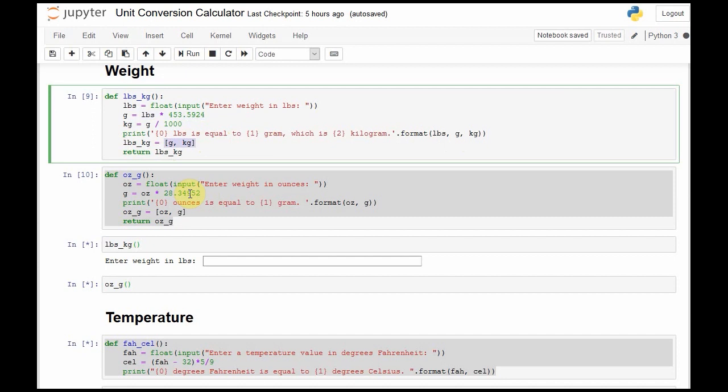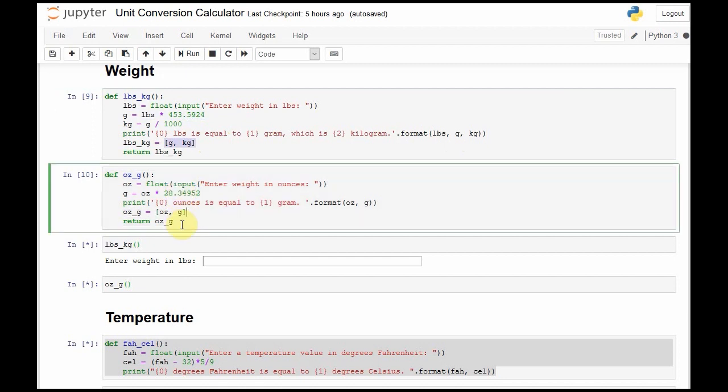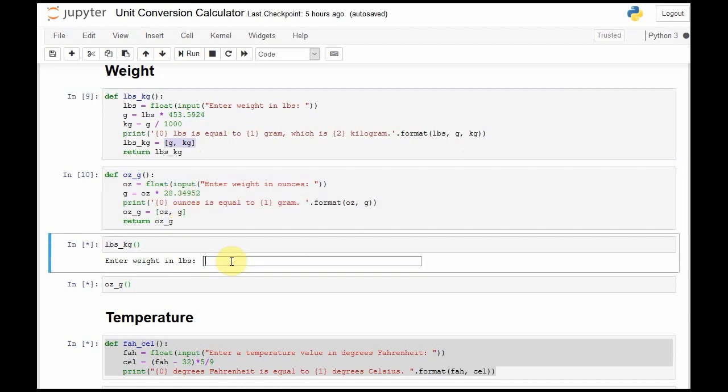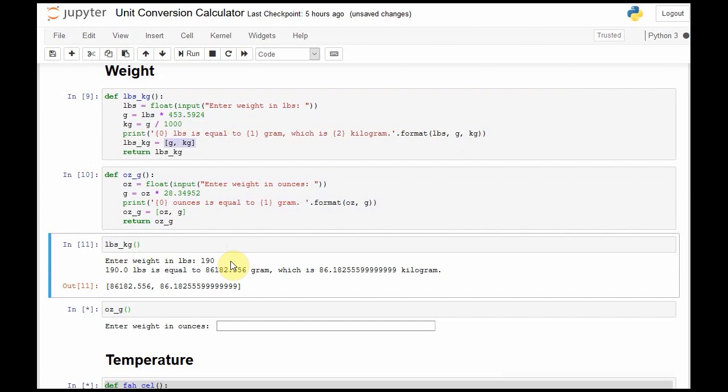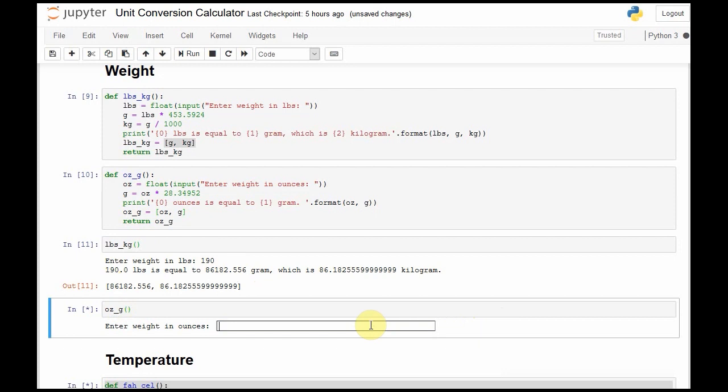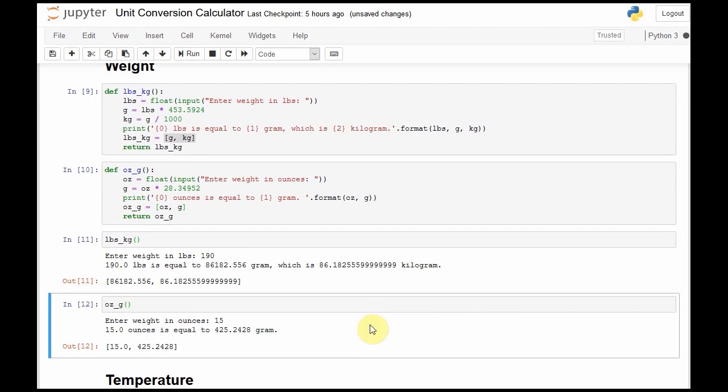We do the same for ounces to grams. You could have chosen stone, you could choose metric tons, which is not the same as imperial tons, for whichever reason. 190 pounds is equal to 86 kilograms, and here's the raw data of that, both the gram and kilogram value, neatly tucked into a list that we can make use of somewhere else. 15 ounces gives us 425 grams.